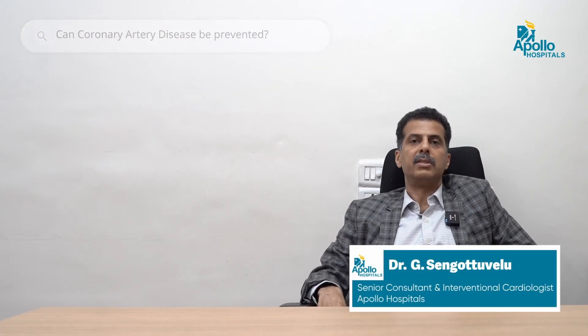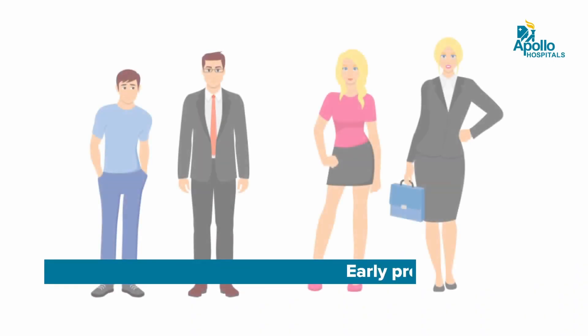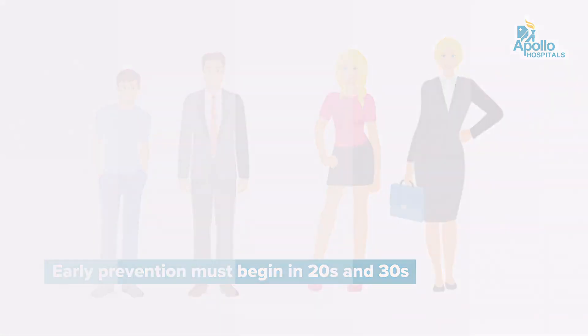Can coronary artery disease be prevented? Yes, it is very important to know that in the majority of patients, coronary artery disease can be prevented if preventive measures are taken very early in life. The disease process can even start in one's 20s and 30s, and hence prevention should begin early in life.